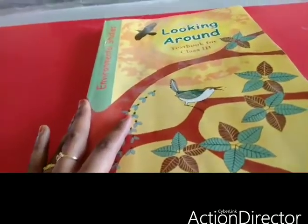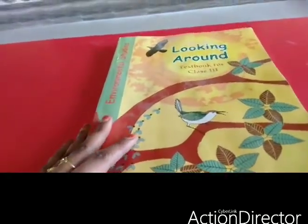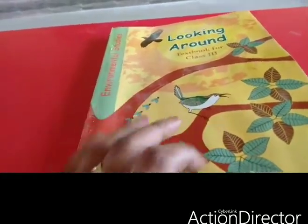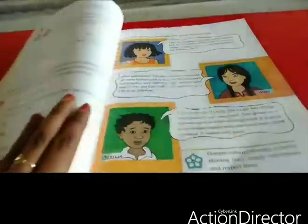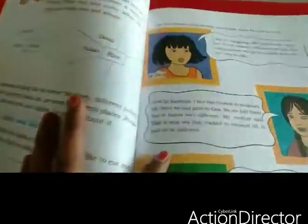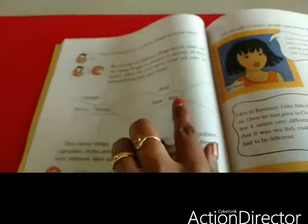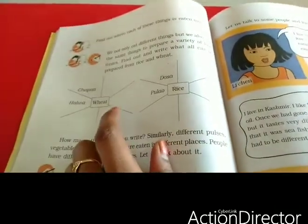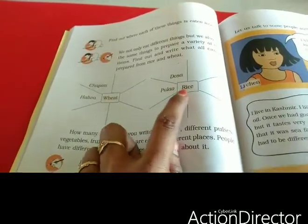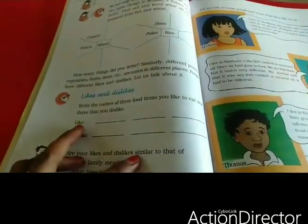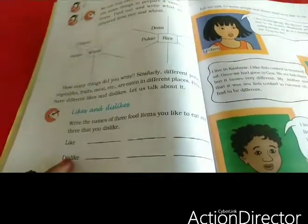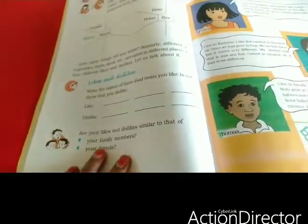Now we are going to see the remaining part of the lesson 'Food We Eat.' They have given some girls and boys and how they are eating. You have completed this already in our weekly test — what foods we can make from wheat and rice. Also, whatever you like and dislike as food items, complete this in your book.